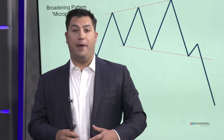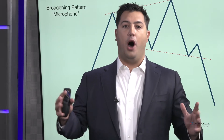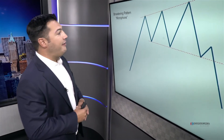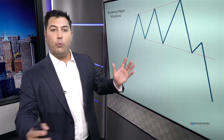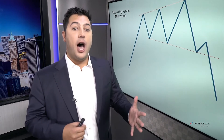Another popular reversal pattern that is actually rare is the microphone pattern, the broadening top or the broadening bottom. Instead of having converging trend lines like a symmetrical triangle or a wedge, you have a broadening pattern where the trend lines are going away from one another. Volatility is picking up. This is normally something we see at tops or bottoms. The expansion in volatility is evidence of a turning point, not evidence of a continuation.